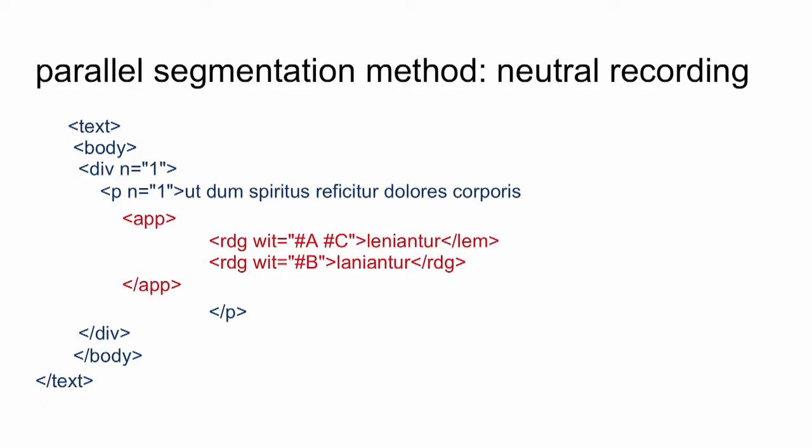So how do we encode this? It's almost the same as the positive apparatus example, except that we don't have a lemma, but a reading also for 'lenianto.' No choice is made to propose a better reading and a rejected reading — they are all at the same level, all readings.